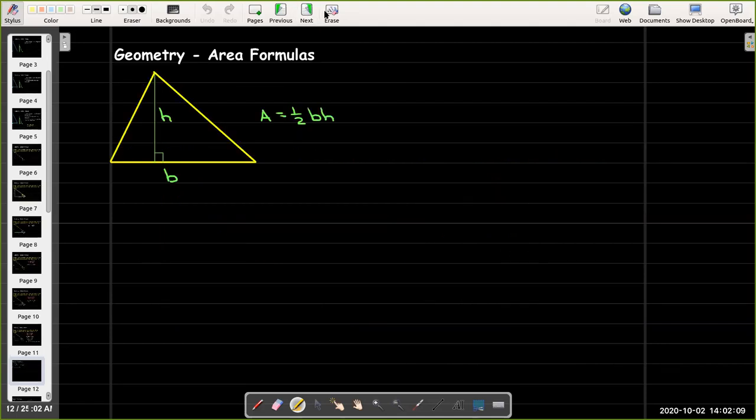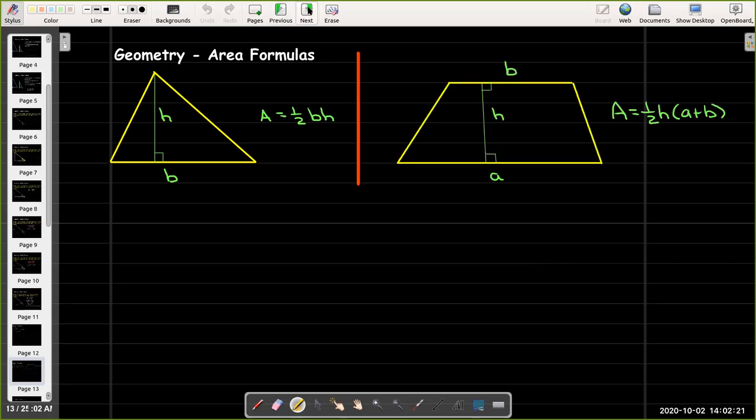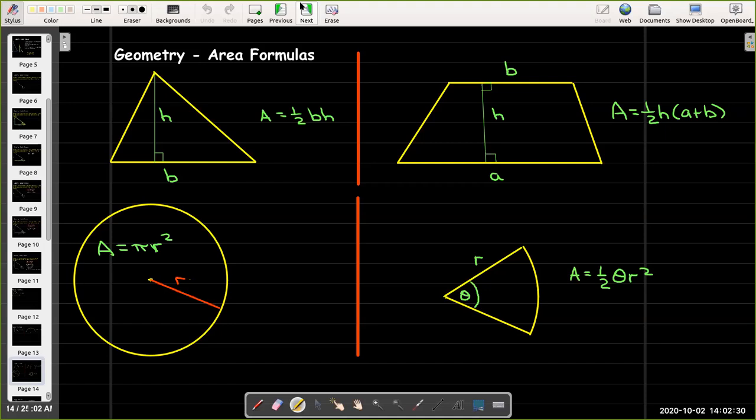We'll need to know area formulas, not all of them but quite a few. Of course we need to know area of a rectangle. But the area of a triangle is half base times height. Area of a trapezoid is going to be one half the height times a plus b. For the full circle it's pi r squared.